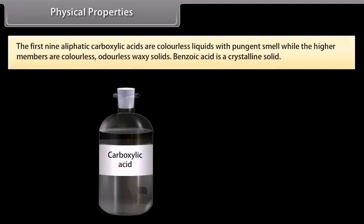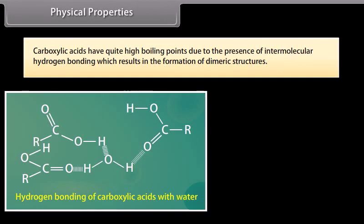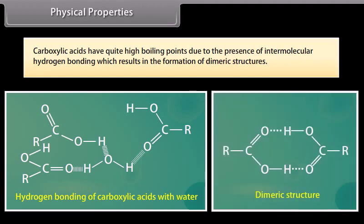Physical properties: the first nine aliphatic carboxylic acids are colorless liquids with pungent smell, while the higher members are colorless, odorless, waxy solids. Benzoic acid is a crystalline solid. Carboxylic acids have quite high boiling points due to the presence of intermolecular hydrogen bonding, which results in the formation of dimeric structures.